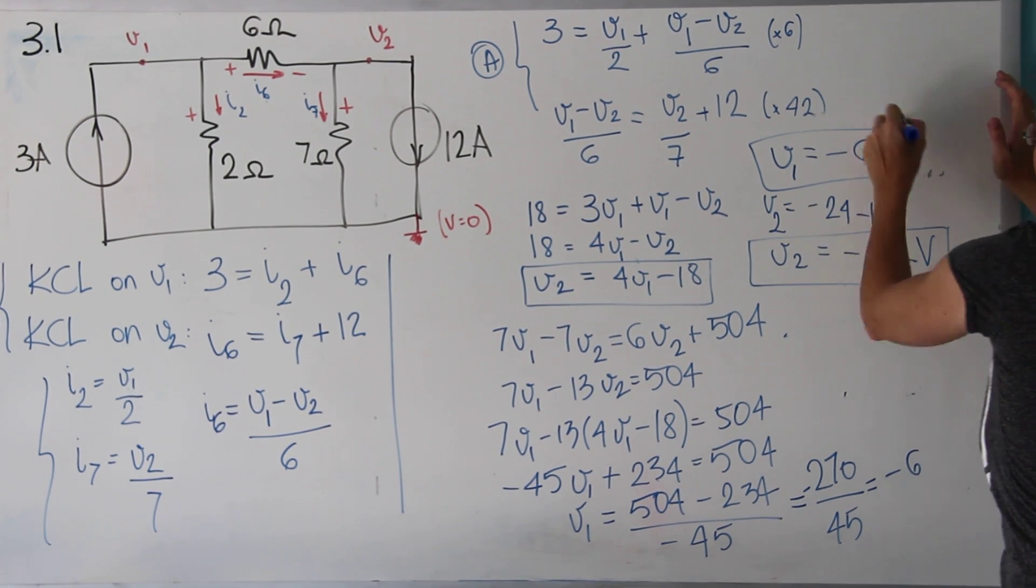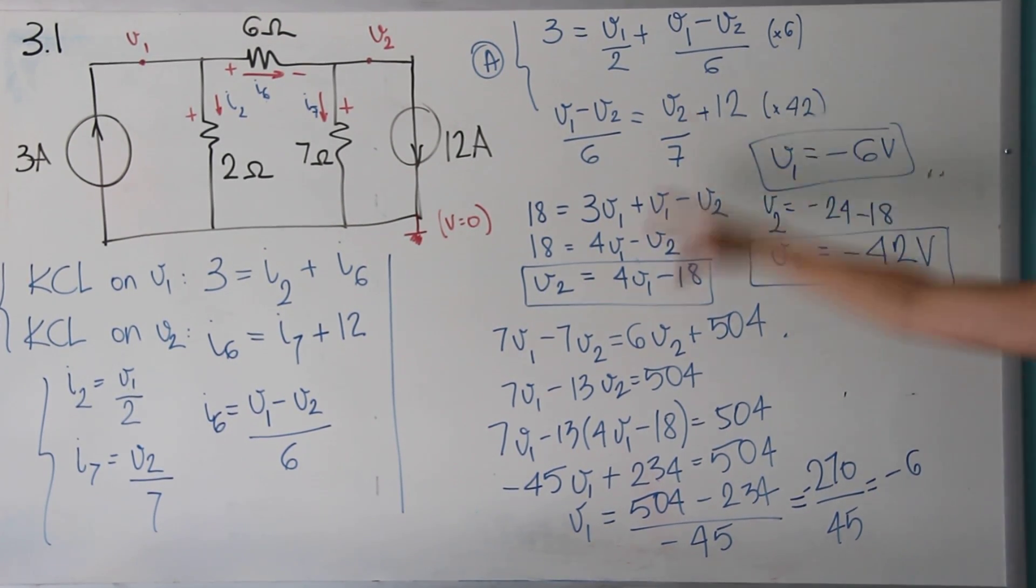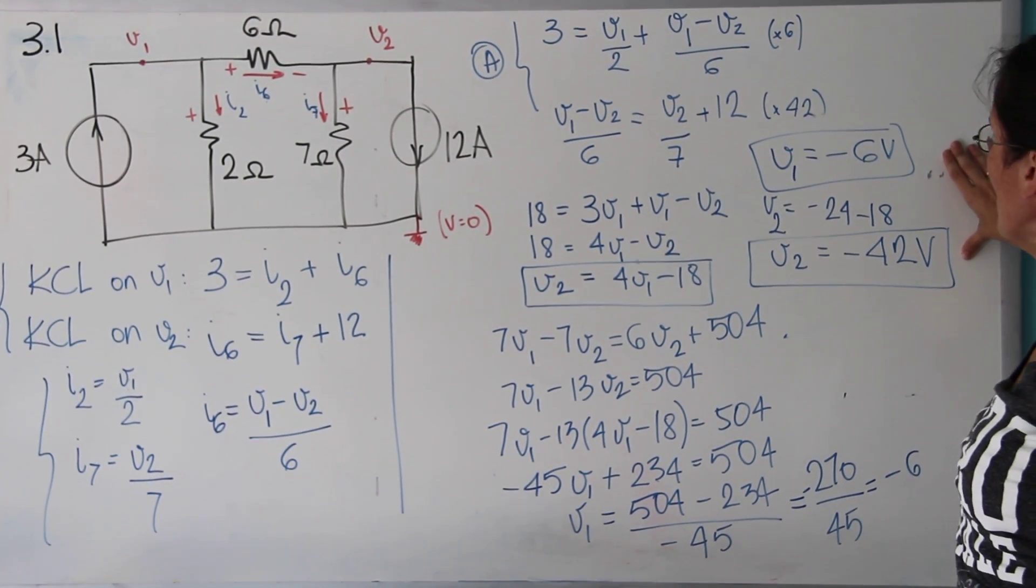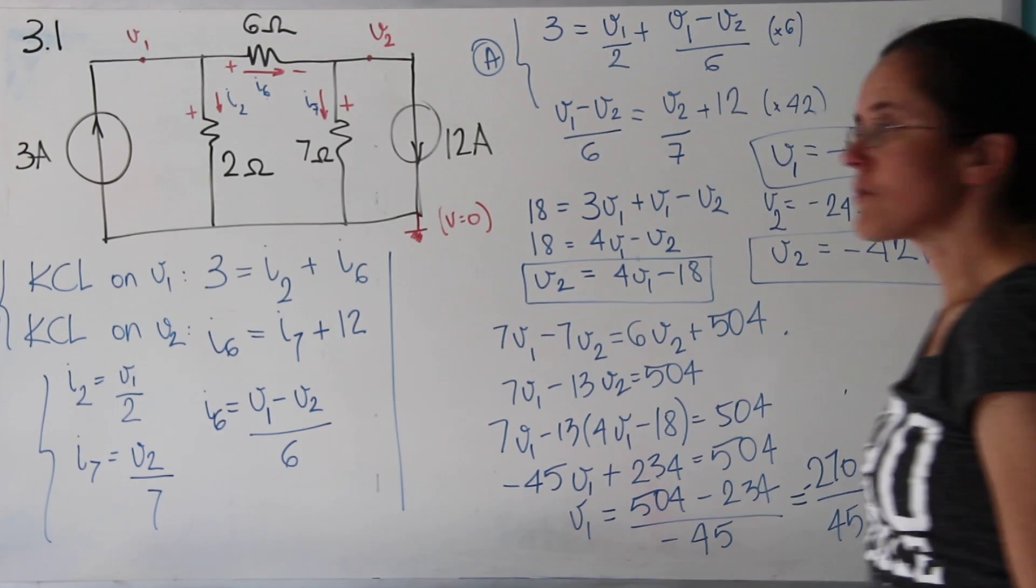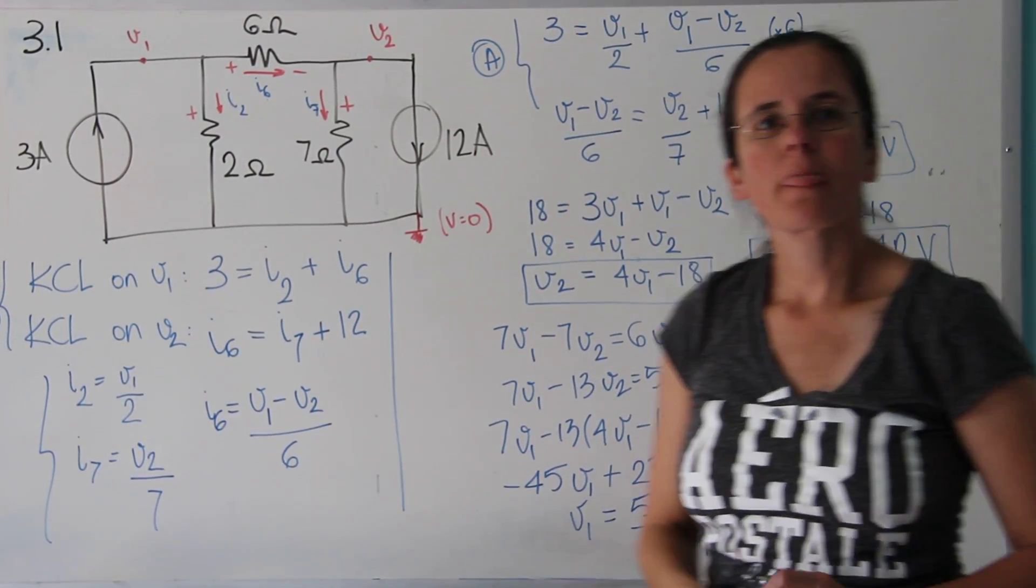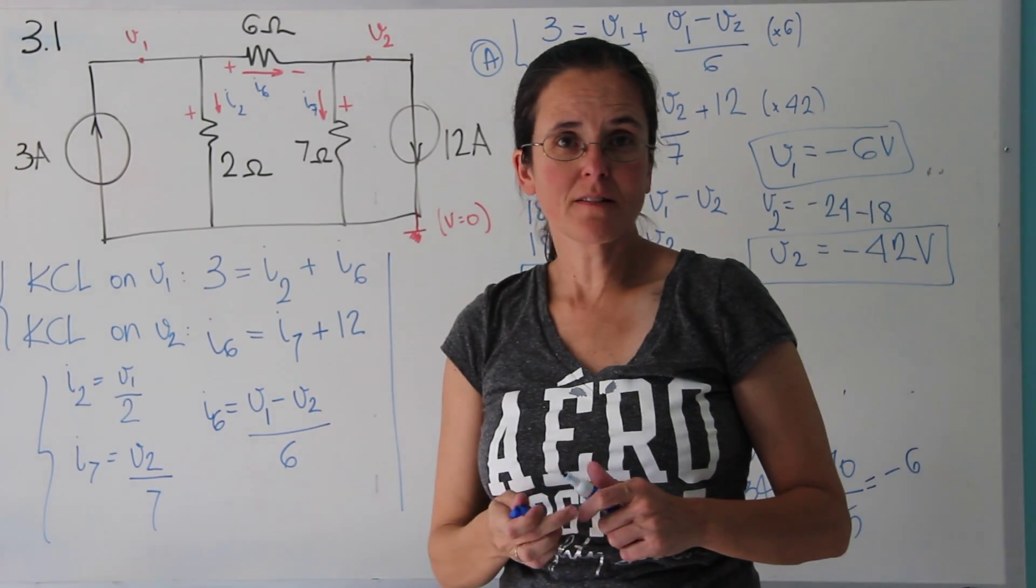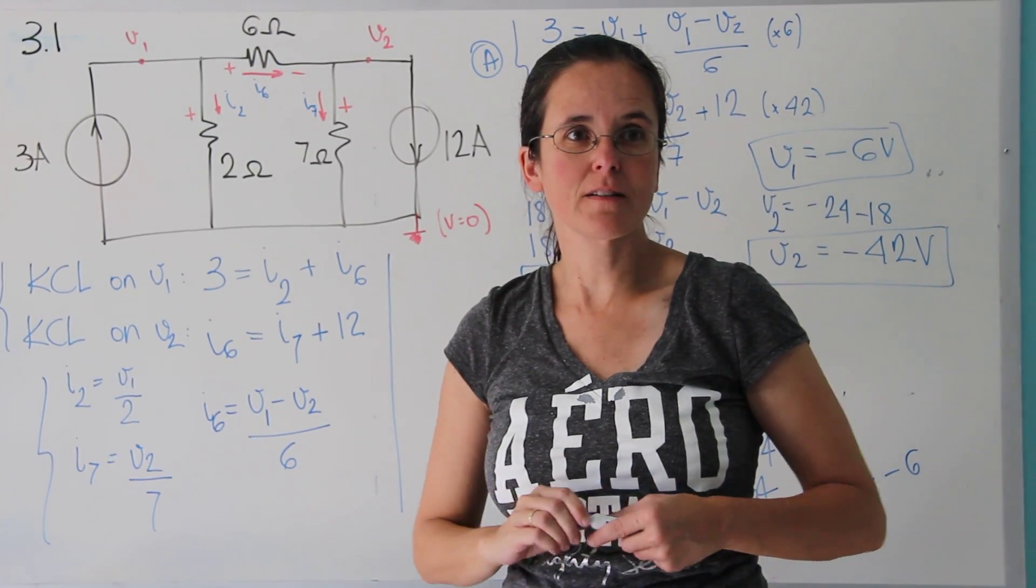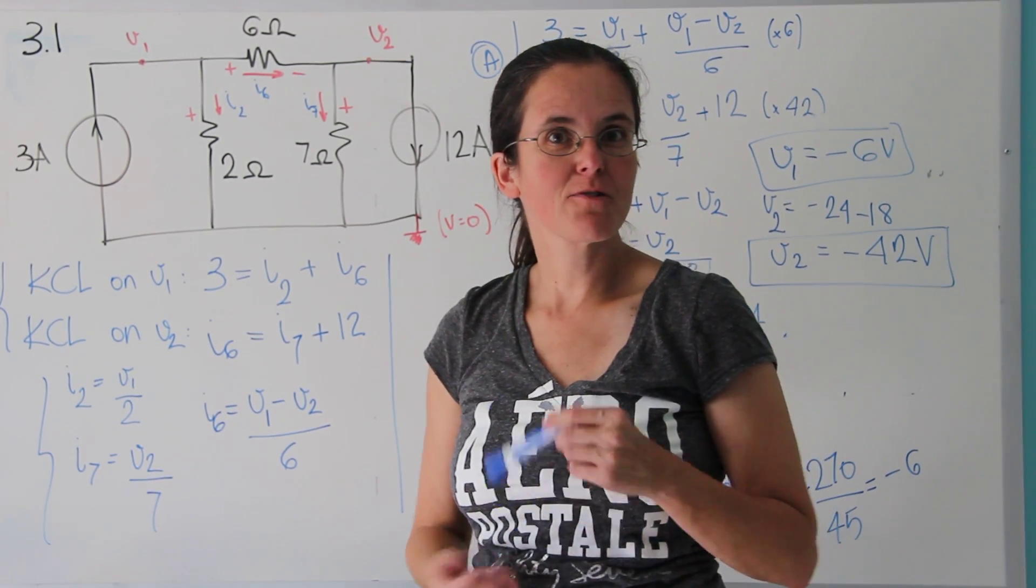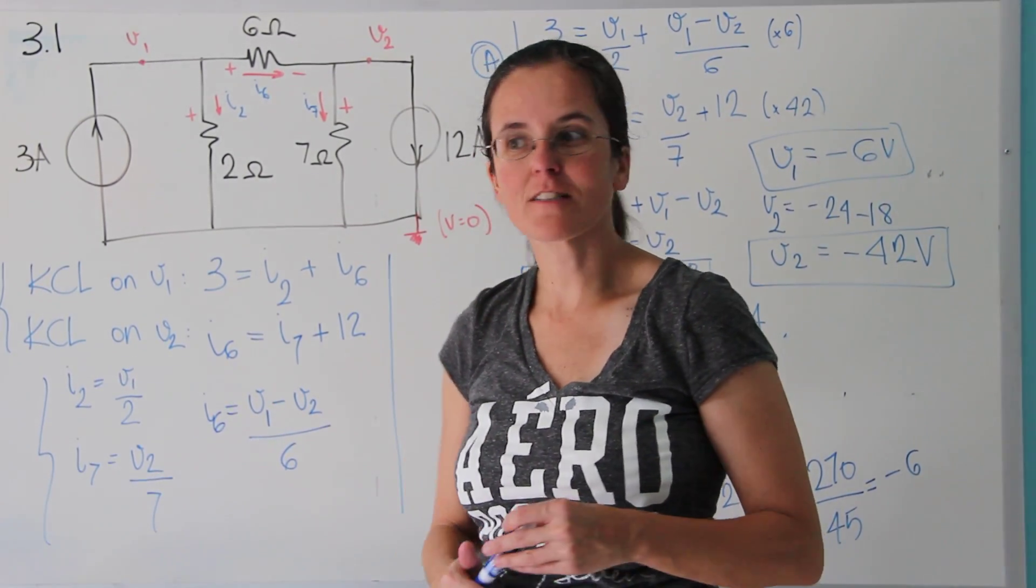So basically we found these two. It took a long time. I'm not sure why, but basically we found these two voltages or nodal voltages. This guy is minus 6. This is minus 42. You can send me an email if you have questions, it's my GMU email or through Piazza. You can ask a question. See you guys.